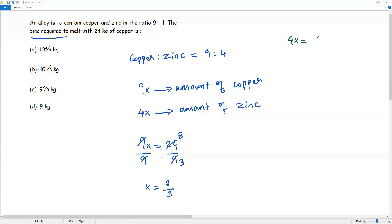So 4x equals 4 times 8 over 3. 4 times 8 is 32, so 32 over 3. Here it's an improper fraction.